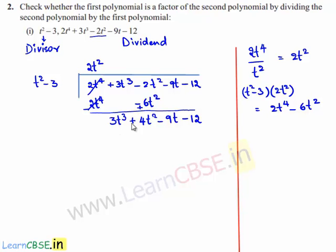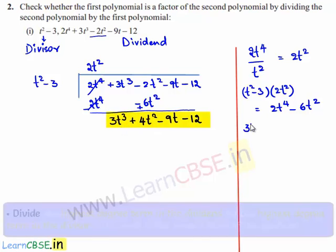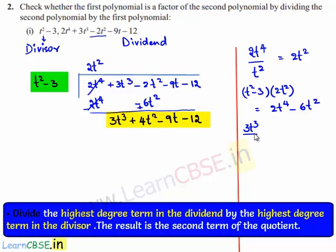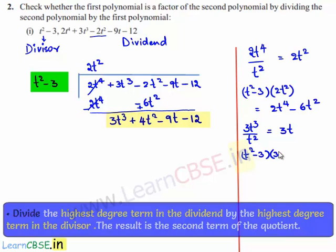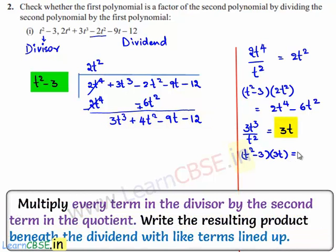The highest degree term in the new dividend is 3t³. When divided by t², we get 3t. So t²-3 multiplied by 3t gives 3t³-9t. So 3t is written at the place of the quotient and this product is written here.